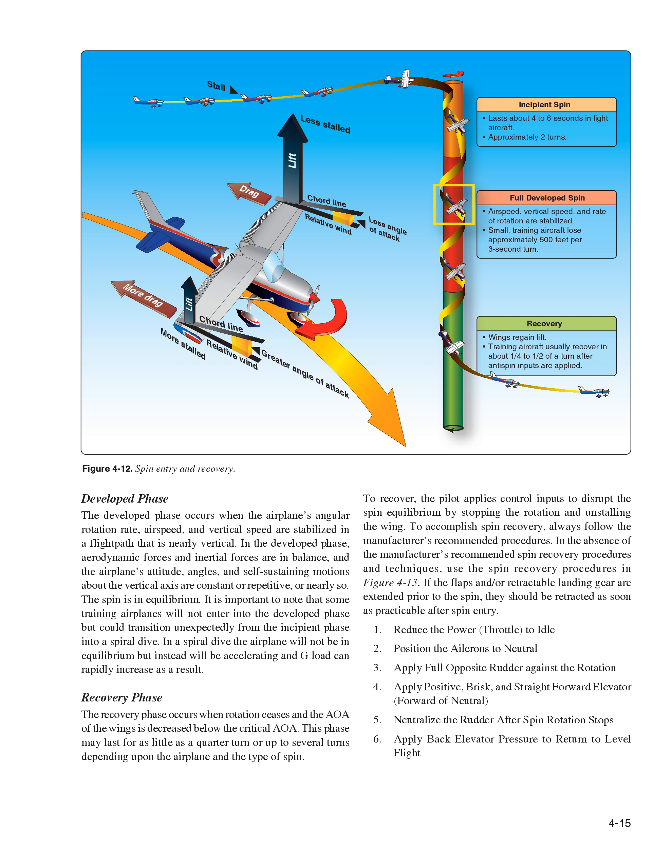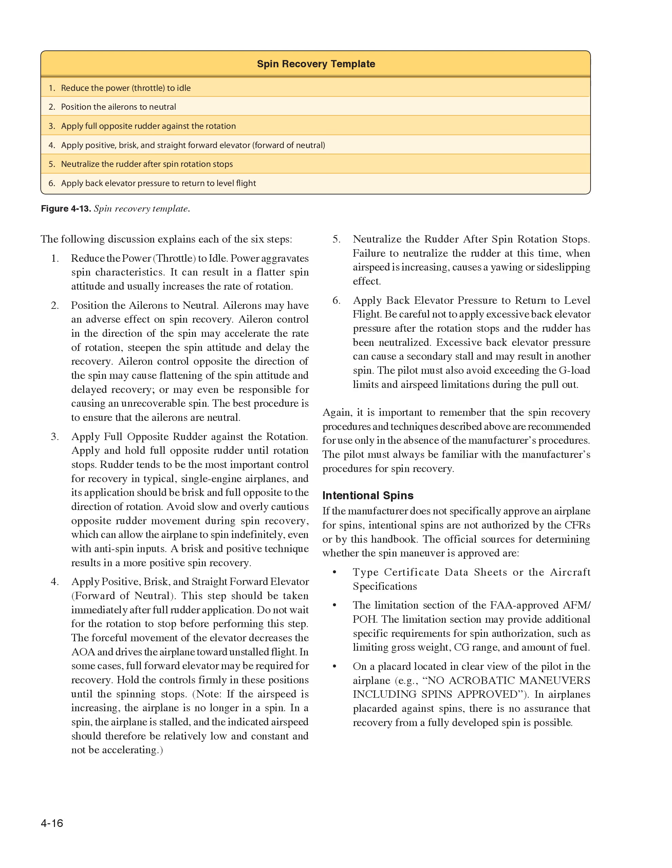To accomplish spin recovery, always follow the manufacturer's recommended procedures. In the absence of the manufacturer's recommended spin recovery procedures, use the generic spin recovery steps: 1) Reduce the power — throttle to idle, as power aggravates spin characteristics, can result in a flatter spin attitude, and usually increases the rate of rotation. 2) Position the ailerons to neutral — ailerons may have an adverse effect on spin recovery. Aileron control in the direction of the spin may accelerate the rate of rotation and steepen the spin attitude. Aileron control opposite the direction of the spin may cause flattening of the spin attitude and delayed recovery, or may even be responsible for causing an unrecoverable spin. The best procedure is to ensure the ailerons are neutral.